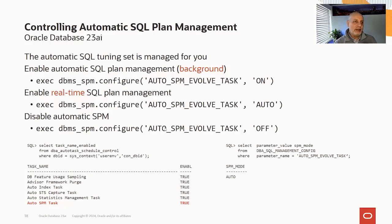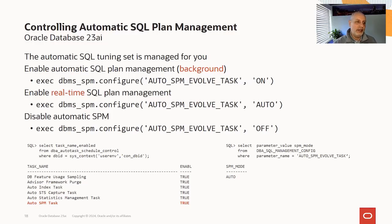The automatic SQL tuning set is managed for you — you don't need to turn that on and off. Once you configure the features on, it will wake up. For the background version — the 19c version of auto SPM — you set the task to 'on'. To enable real-time SPM, the 23ai feature, you set the configuration to 'auto'. You can disable everything altogether using 'off'. There are a couple of views to check the status — for example, you can see the auto SPM task has woken up, and the SQL tuning set capture task is also in the list.